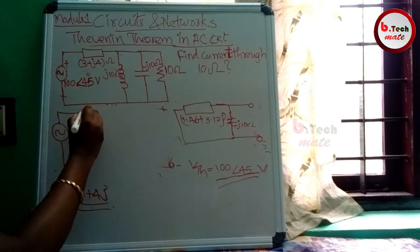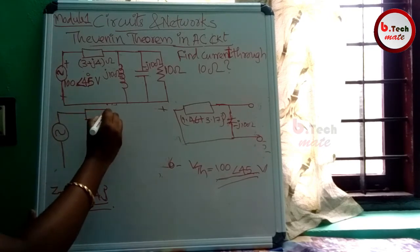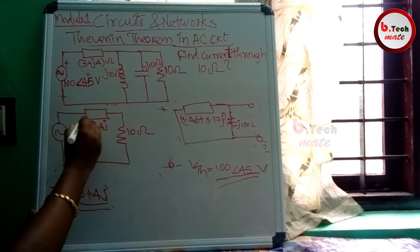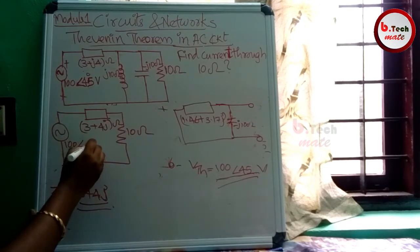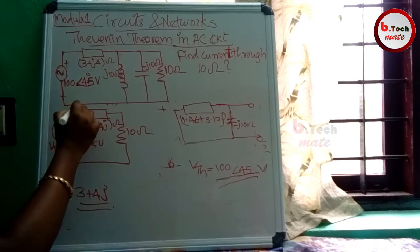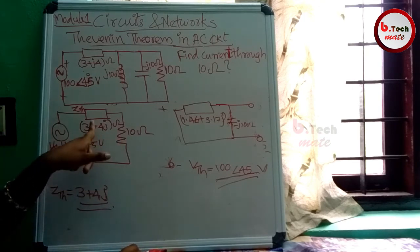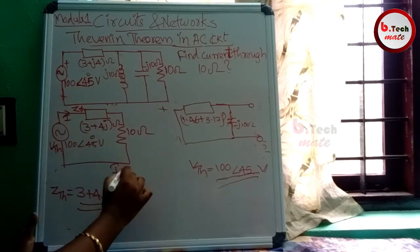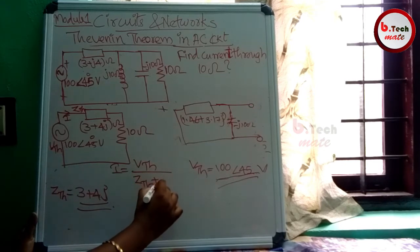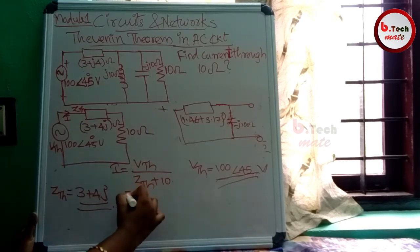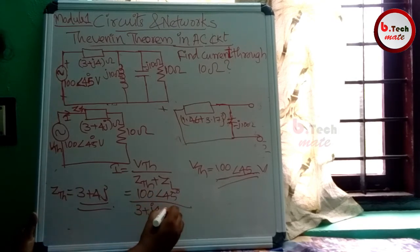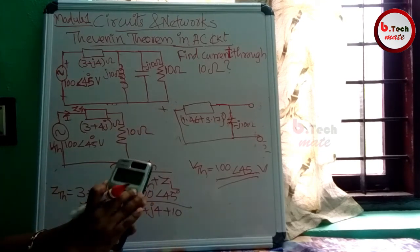So ZTH equals 3 plus 4J. This is 100 angle 45 for VTH. This is VTH. This is ZTH. This is the current through the 10 ohm resistor. Total current I equals VTH divided by (ZTH plus 10). Substituting: 100 angle 45 degrees divided by (3 plus 4J plus 10), which is 13 plus 4J.